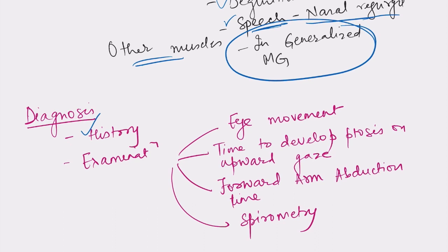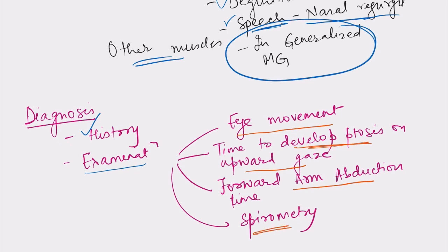For diagnosis, the characteristic history and presentation are assessed. On examination we look for problems in eye movement and observe how much time is taken to develop ptosis when the patient is asked to gaze upward. There is also a test where the person is asked to abduct their arm, and how long they can hold the arm abducted is noted — this is known as forward arm abduction time.